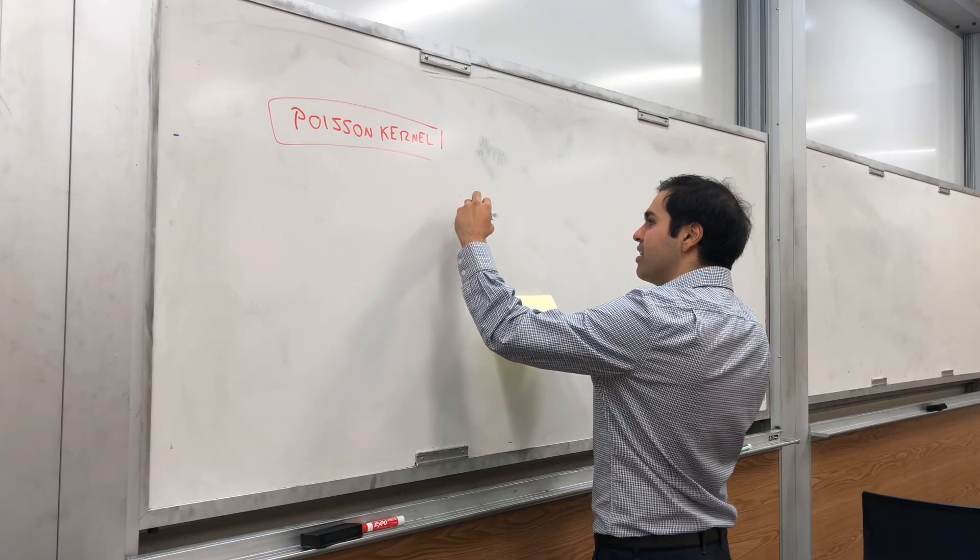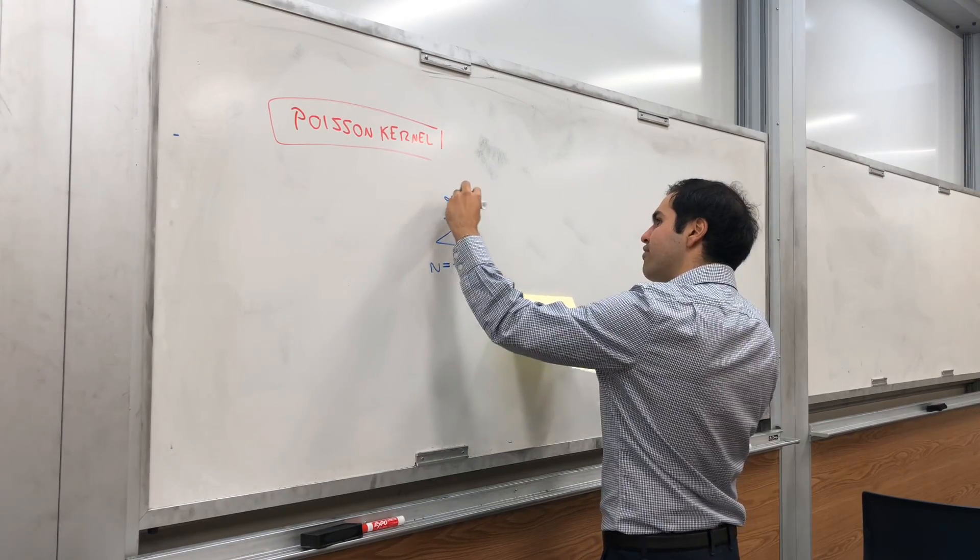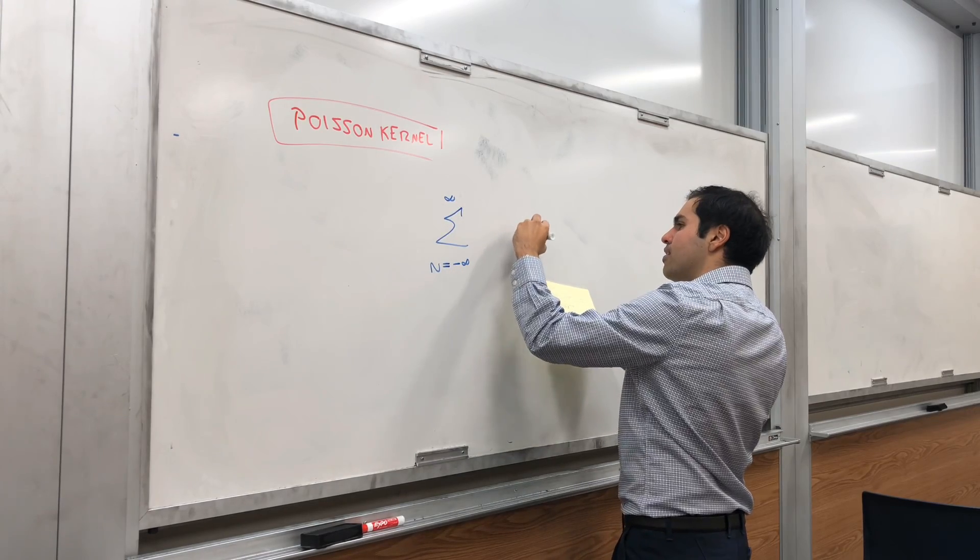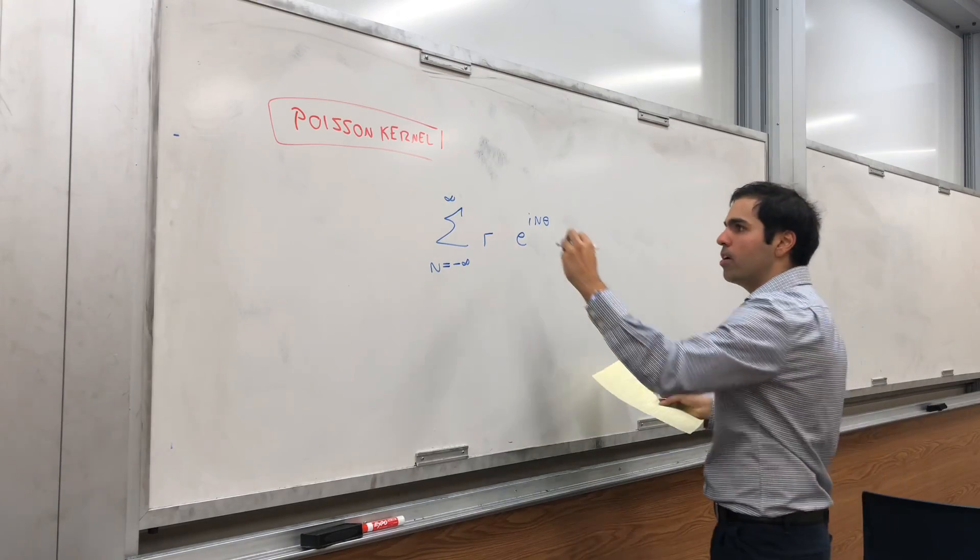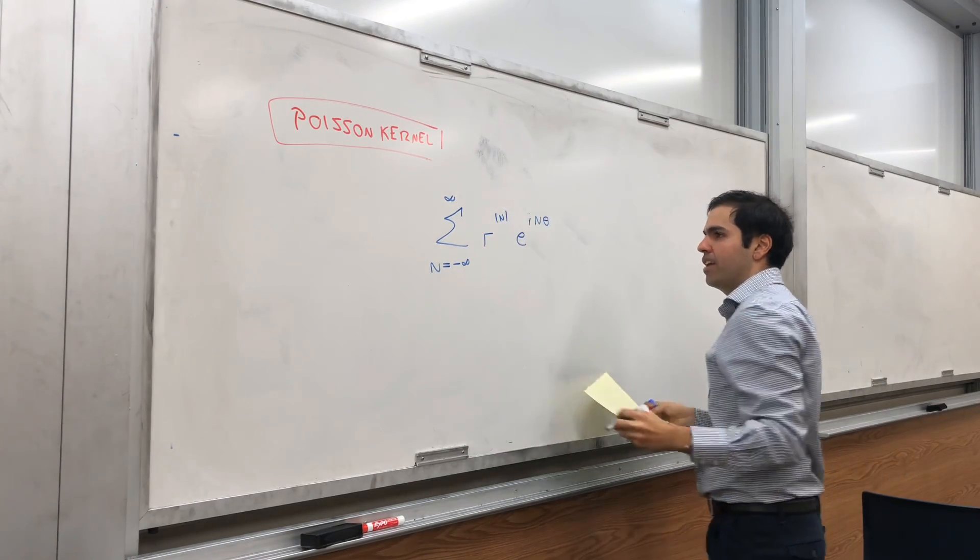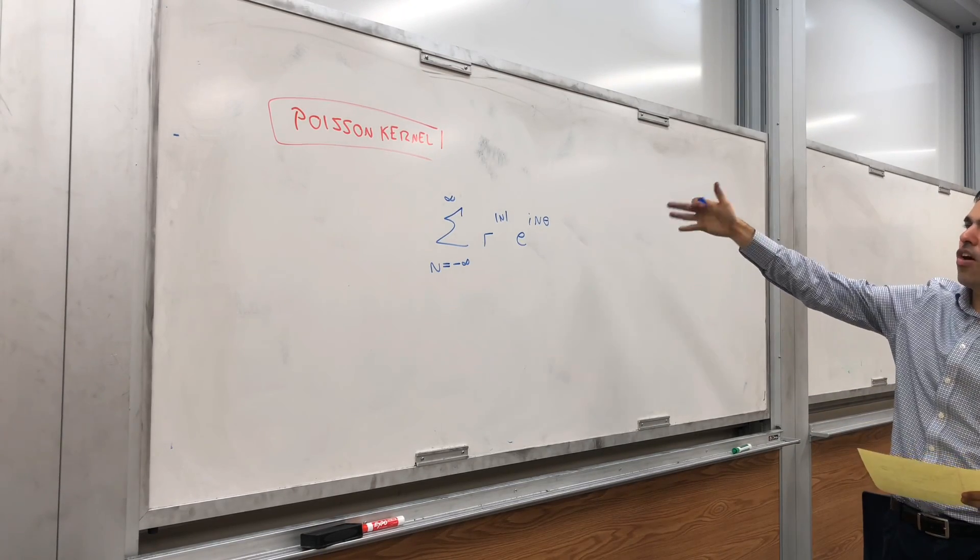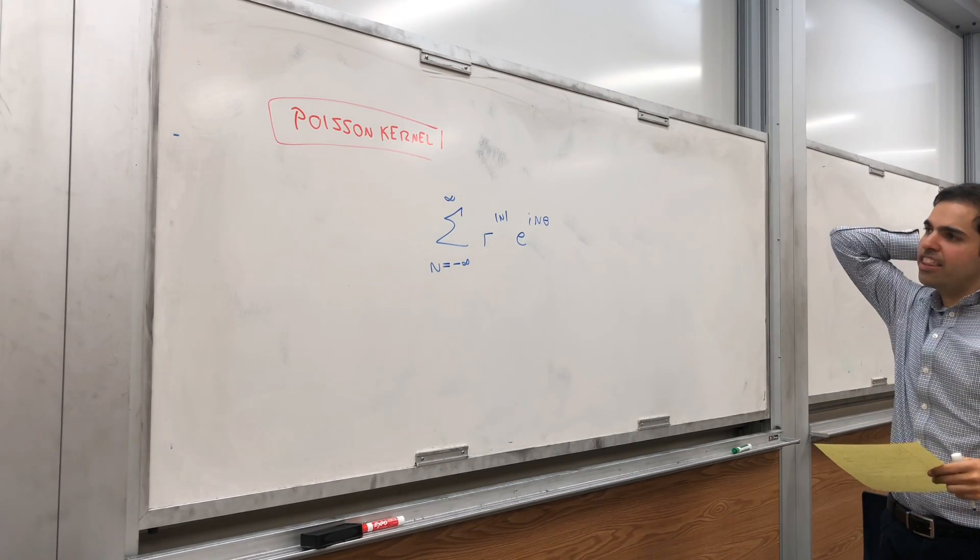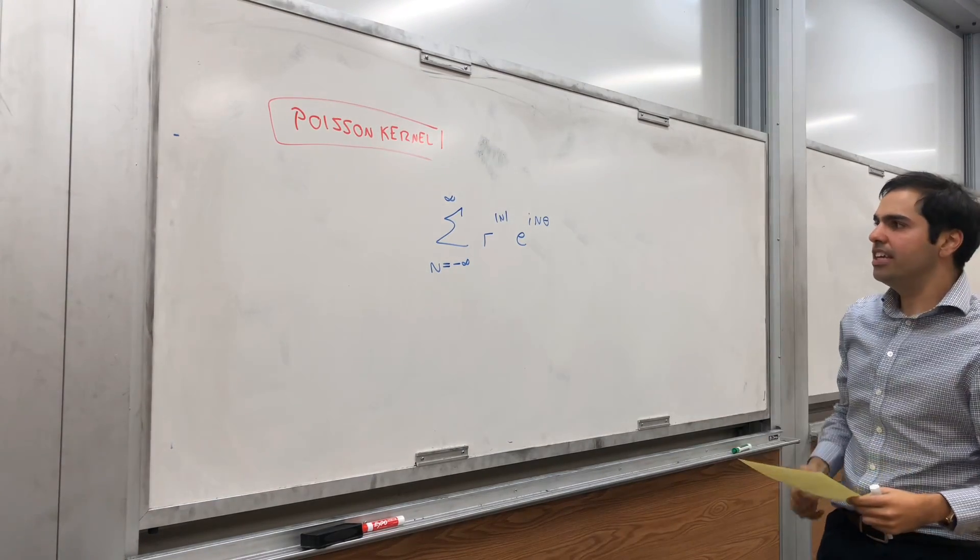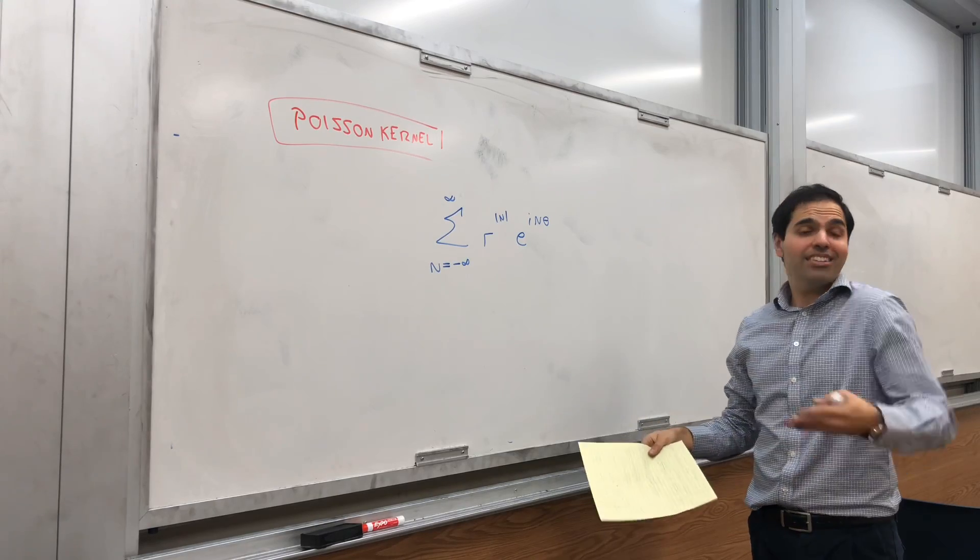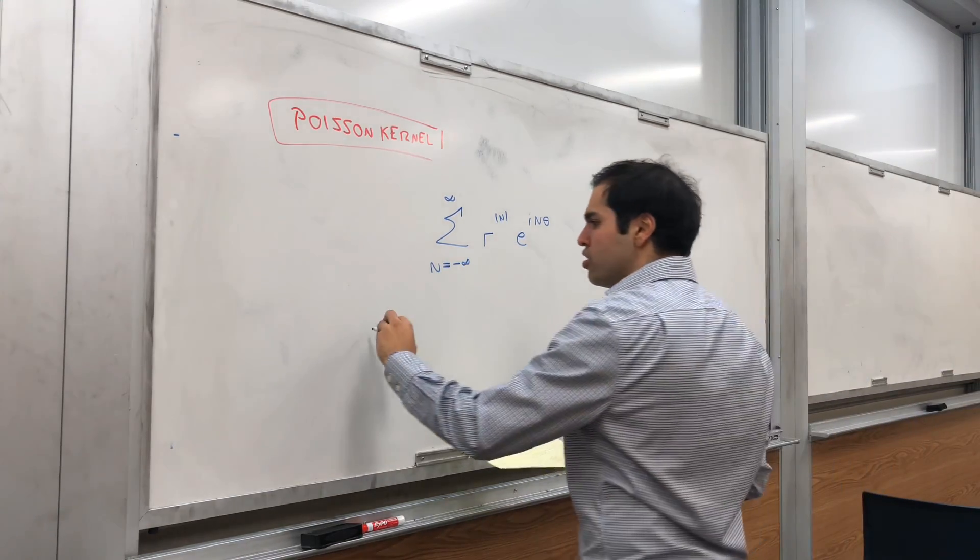Namely, let's try to figure out the sum from n from minus infinity to infinity of e^(inθ) times r to the absolute value of n. So basically, for positive n, it's just r^n e^(inθ). For negative n, it's r^(-n) e^(inθ). And in fact, this is a sum from negative infinity to infinity, so let's just split it up.